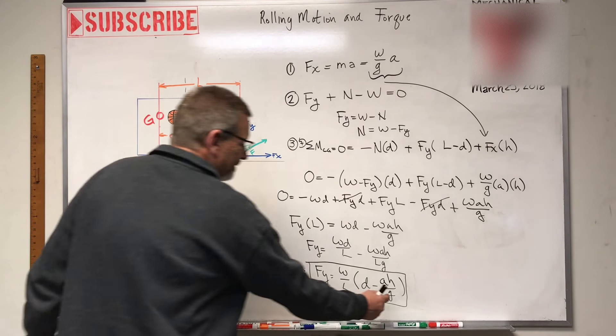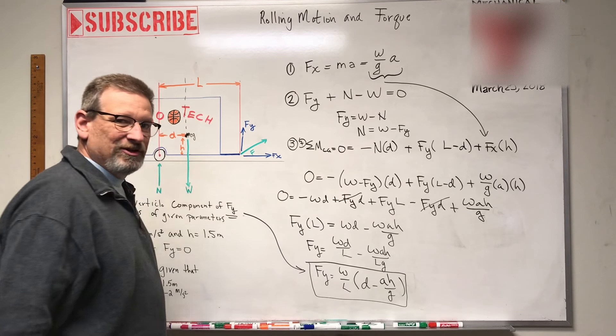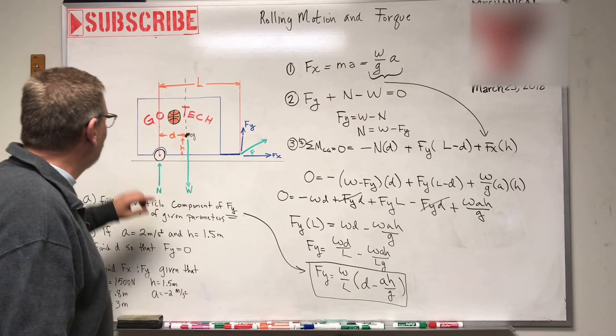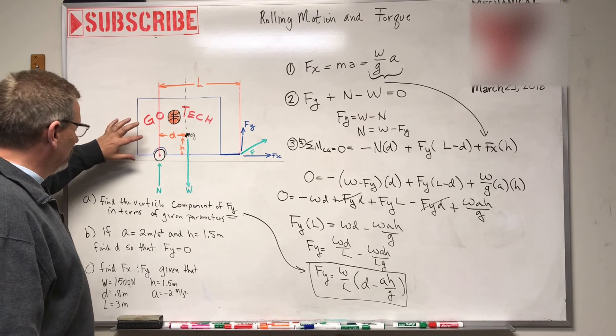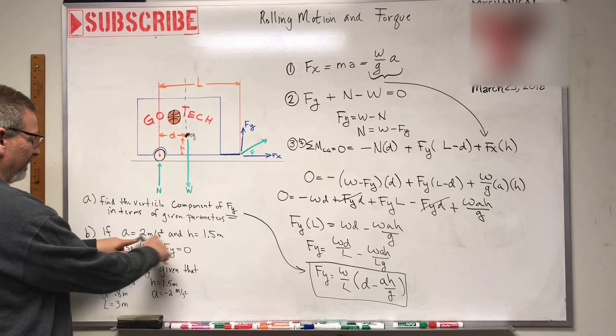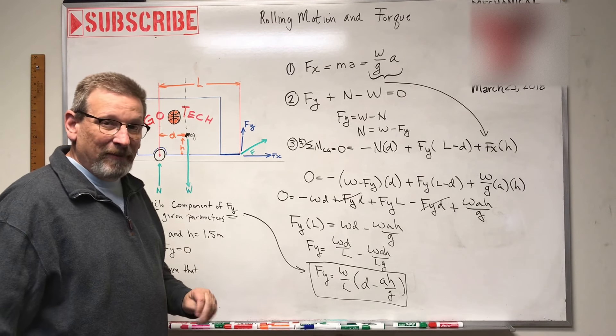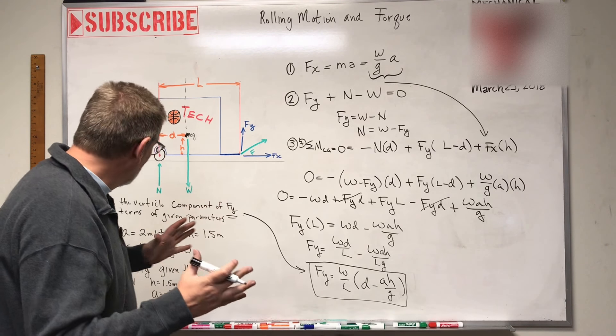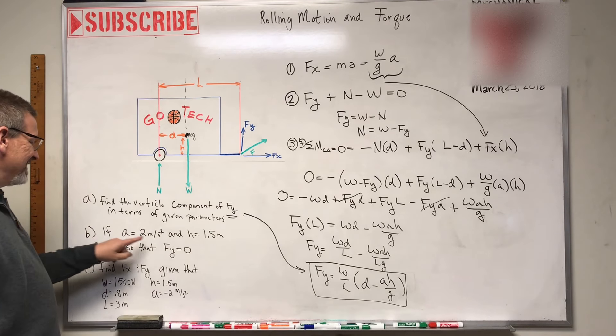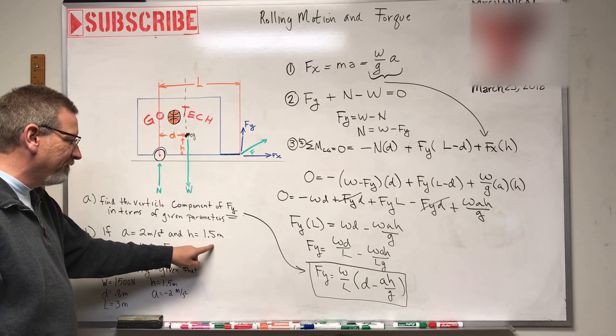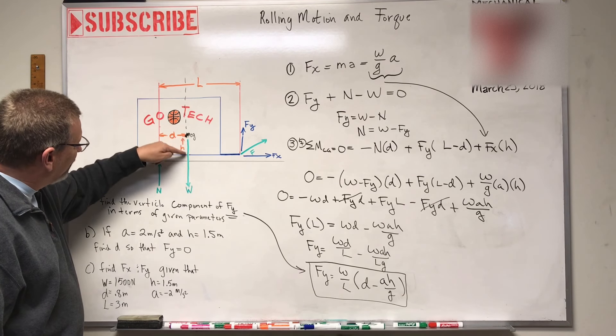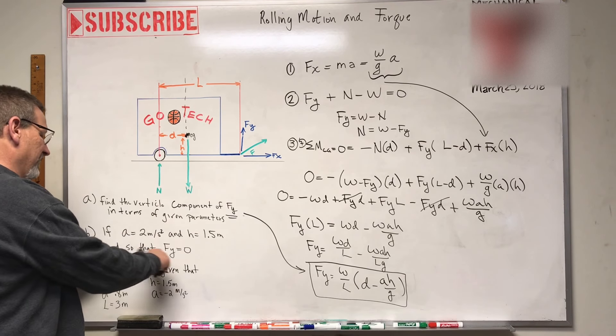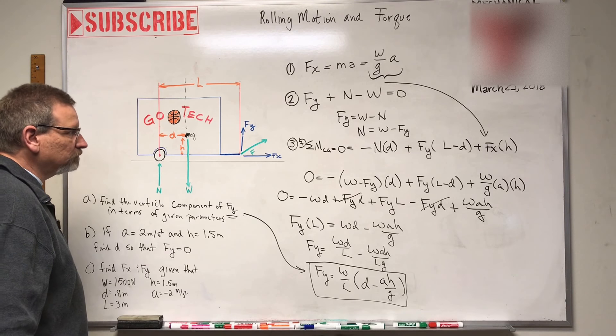So let's take this guy right here and this is kind of the answer to part A. So I have found Fy in terms of the given parameters. There's Fy in terms of W and L and D and A and H and G. Now at this point, the only one I really know is G. That's the acceleration due to gravity. He's negative 9.81 in the downwards direction, right? And I know that he's 9.81 because all this stuff is in metric units. So that would be my metric gravity equivalent. So there's part one. So part two says if A is two meters per second squared and H is 1.5, this little height right here is 1.5 meters. Find D, find the distance D so that Fy equals zero.